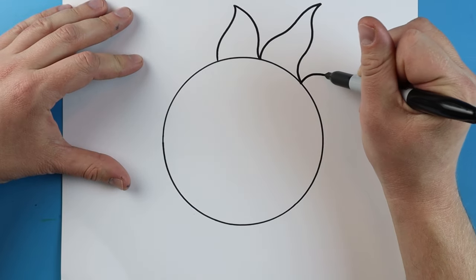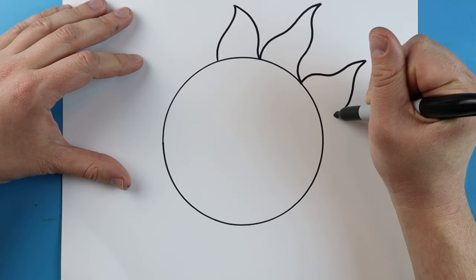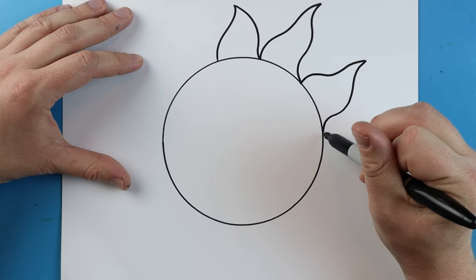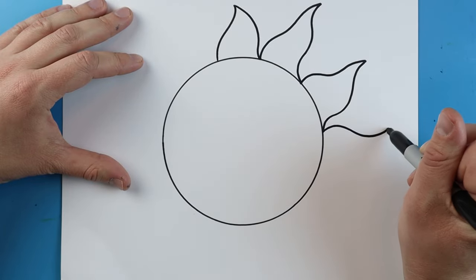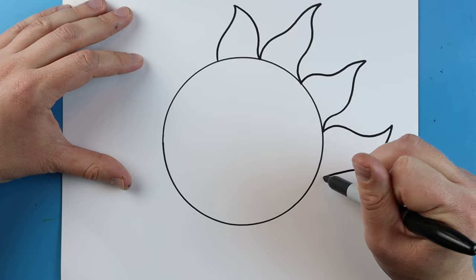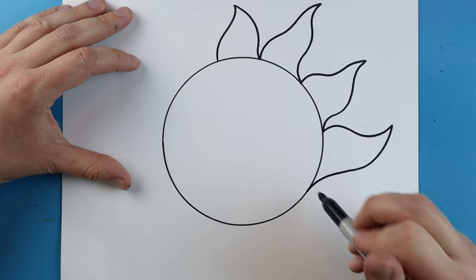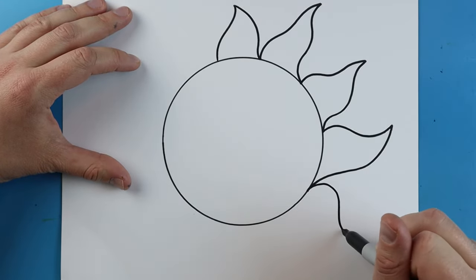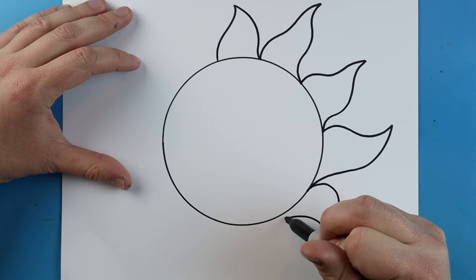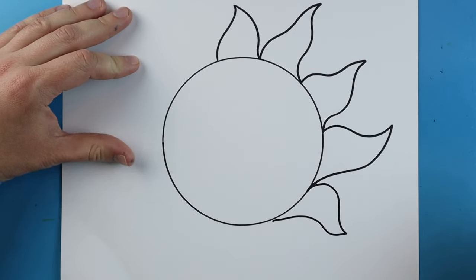The trick when making your little rays on your sun is you want them to be different sizes. You want some of them to be small, some of them to be short, some of them to be a little bit bigger. But you just want them to be kind of all around here. So I'm just going to make some different little rays all around here.